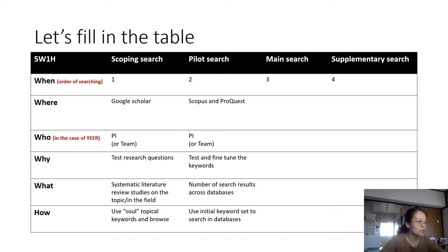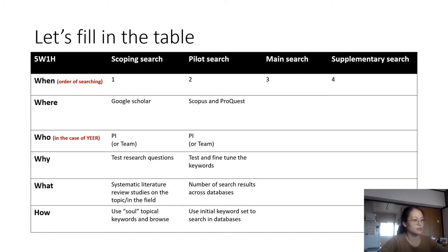We can now fill in the second column. Pilot search comes after scoping search. You go to one or two databases to fine-tune your keywords, and you can do this alone or with team members. The purpose is to test and fine-tune the keywords. You need to look at the number of search results across databases to understand if there's enough existing literature for further review, and look at keywords, titles, and some abstracts to add any relevant keywords you missed. You use your initial keyword set to search in databases of your selection.